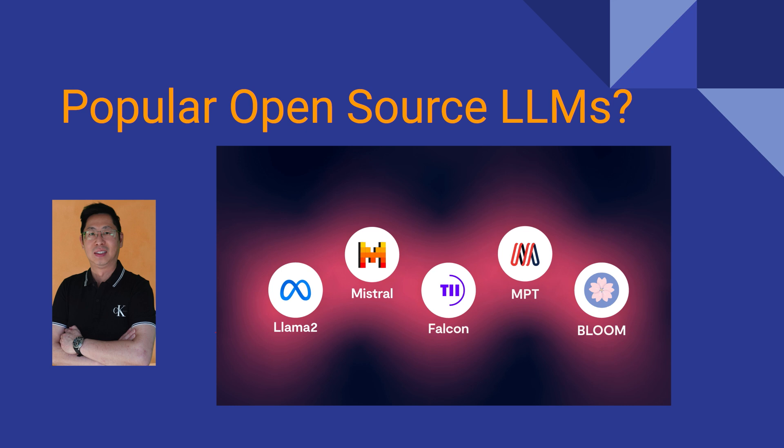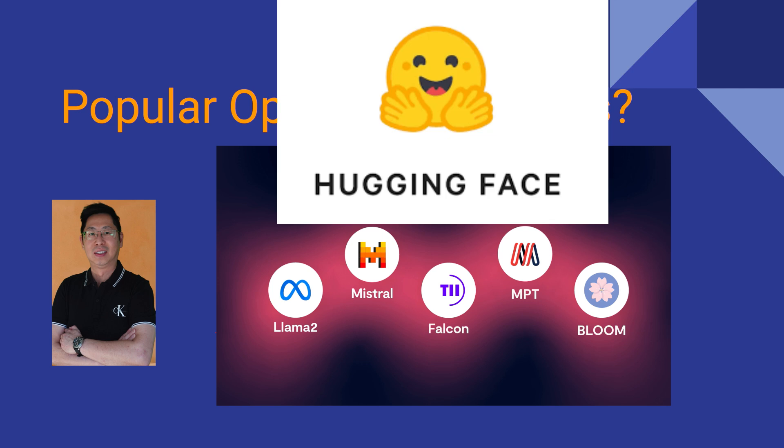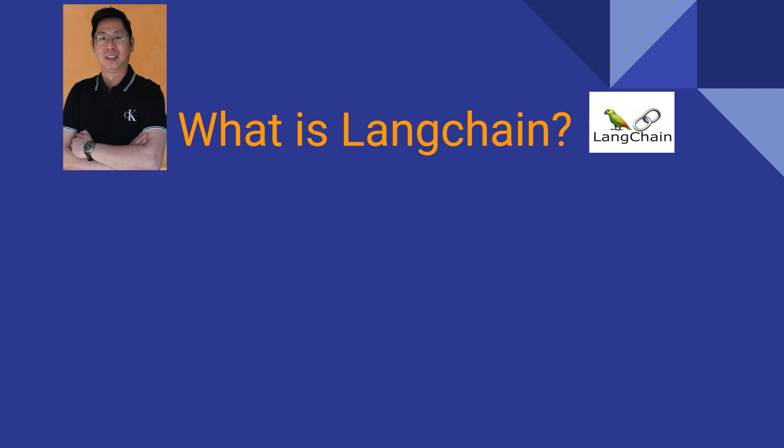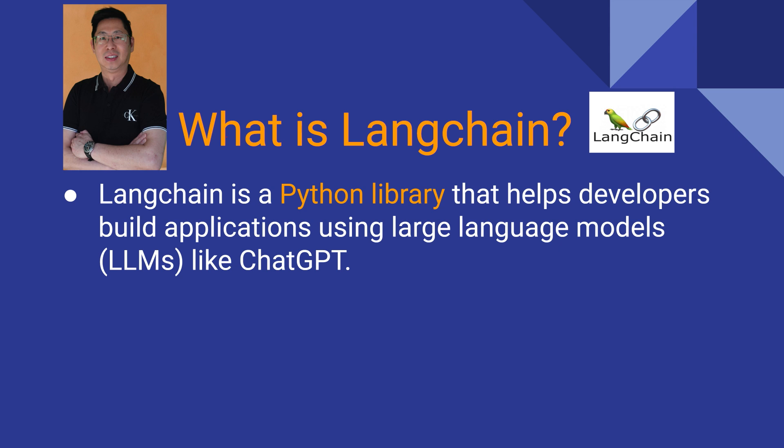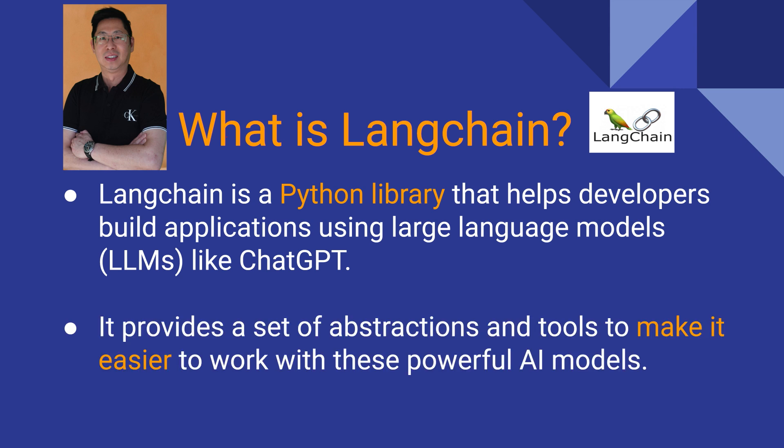Large language models can also be accessed via Hugging Face and other model hubs. LangChain is a solution for working with LLMs in Python professionally. It provides a set of abstractions and tools to make it easier to work with these powerful AI models.